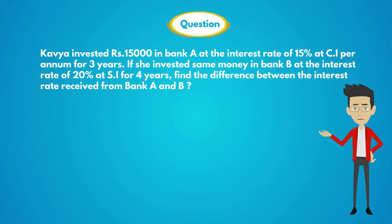Kavya invested 15,000 rupees in bank A at the interest rate of 15% at compound interest per annum for 3 years. If she invested the same money in bank B at the interest rate of 20% at simple interest for 4 years, find the difference between the interest received from bank A and B.